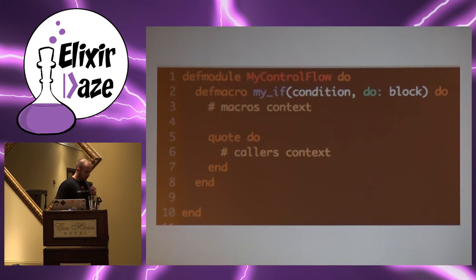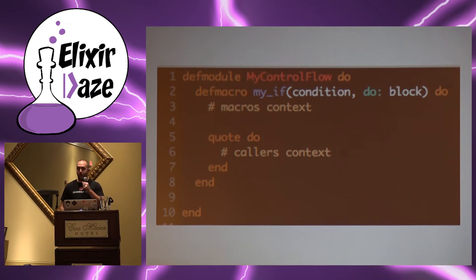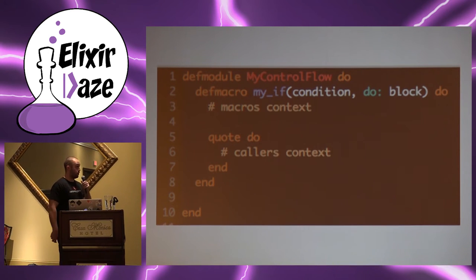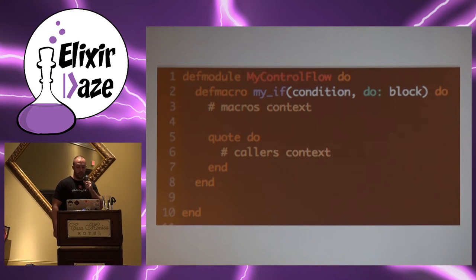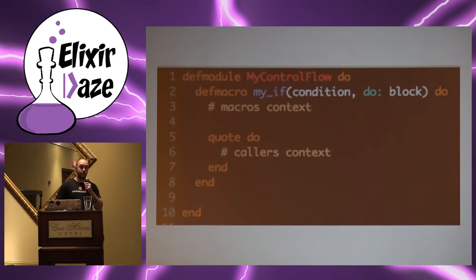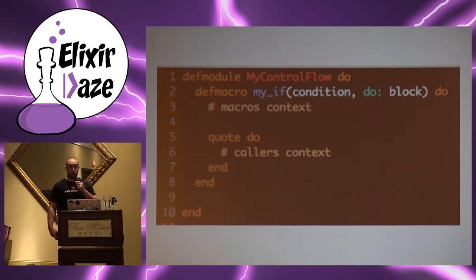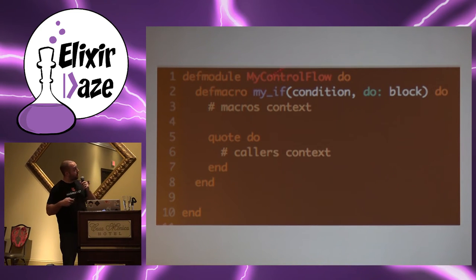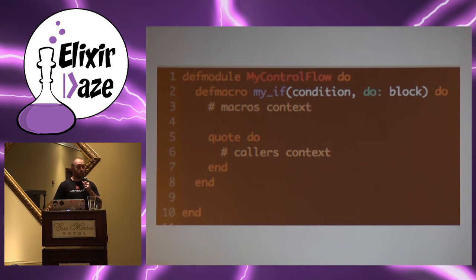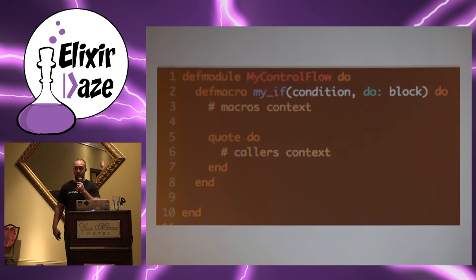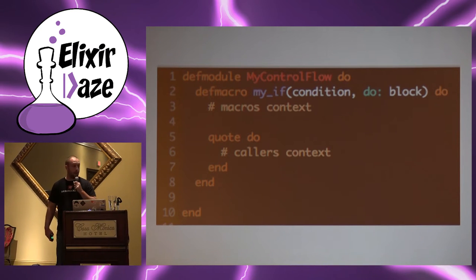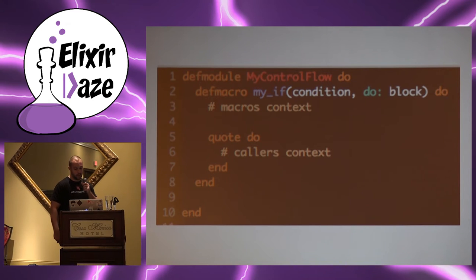All the examples I'm going to give use the most basic macro possible — one that doesn't really do anything — and we'll see how complicated it gets even when we're literally not doing anything. The canonical intro to macros example has been re-implementing the if statement, because if you didn't know, there is no if statement in Elixir — it's a macro. It turns out a lot of things in Elixir are just macros.